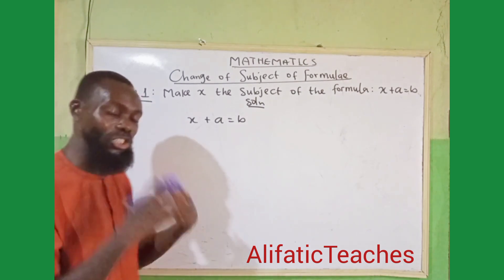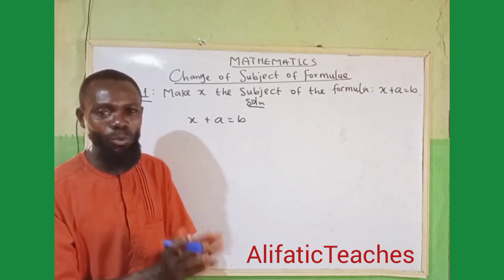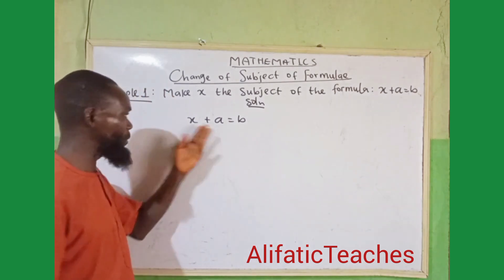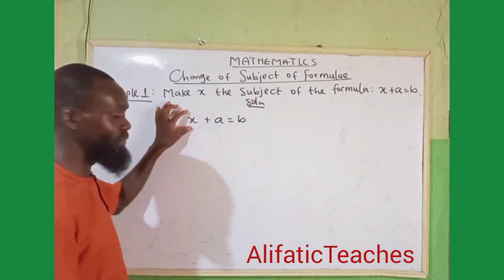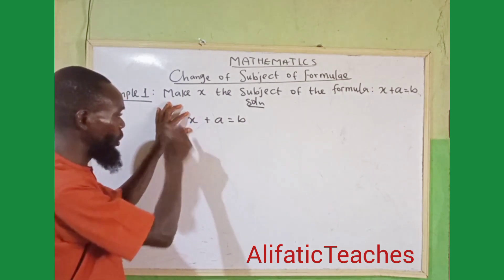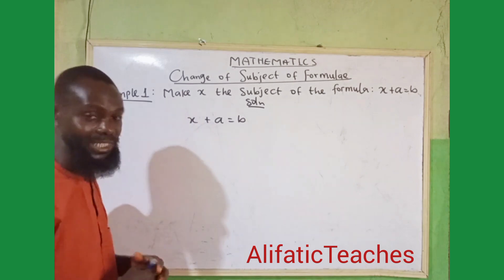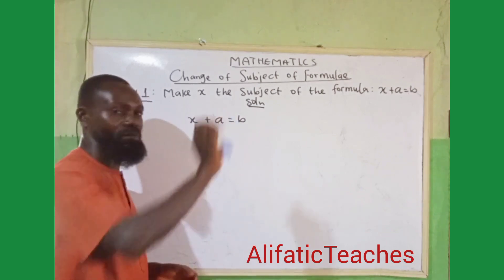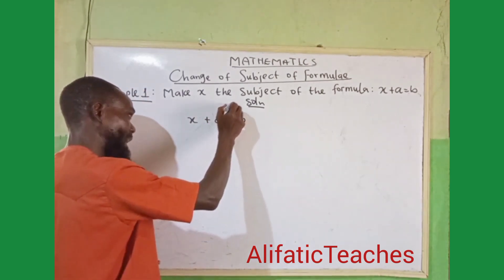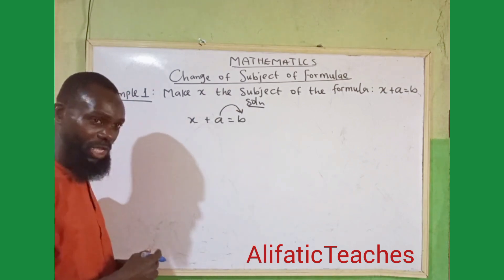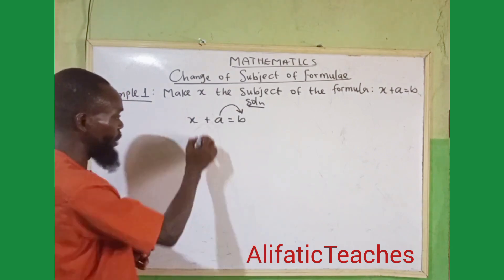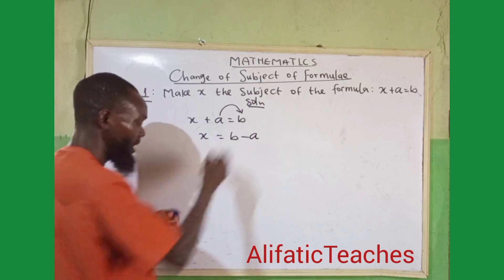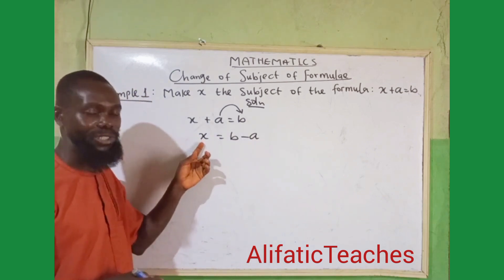Secondly, anything attaching to your unknown letter, maybe it's x or y. Anything attaching to it, you try to detach them. Look at this. We have x + a = b. We want to get the value of x, but this x is only joined to this a by a positive sign. From here, what you are going to do is to take this positive a away. If positive a has to move, it has to cross this equal to. And when it's crossing equal to, it tends to negative a. So we are going to have x = b - a. So positive a is crossing towards minus a. In this case, you have made x the subject of the formula.